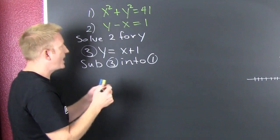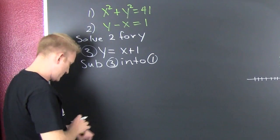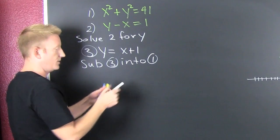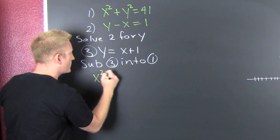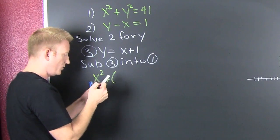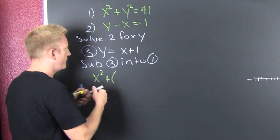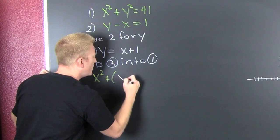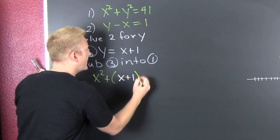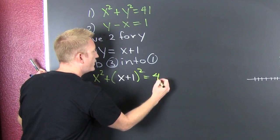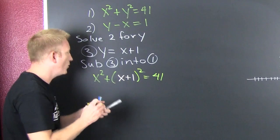And then when I do, what do I get? So then I have an x squared plus wait for it. I heard x plus 1 is the new y. And then that guy squared and it's going to be equal to 41.